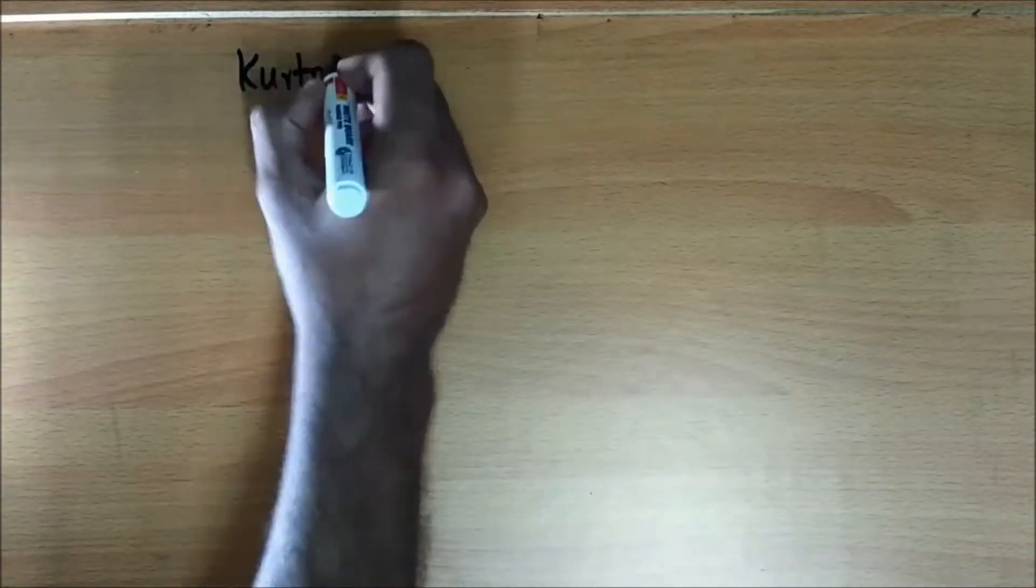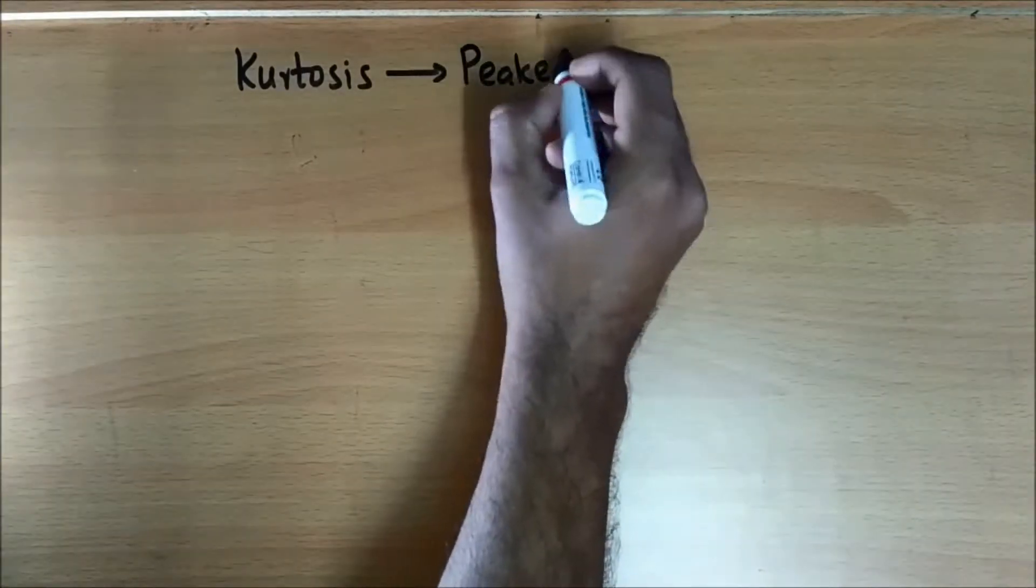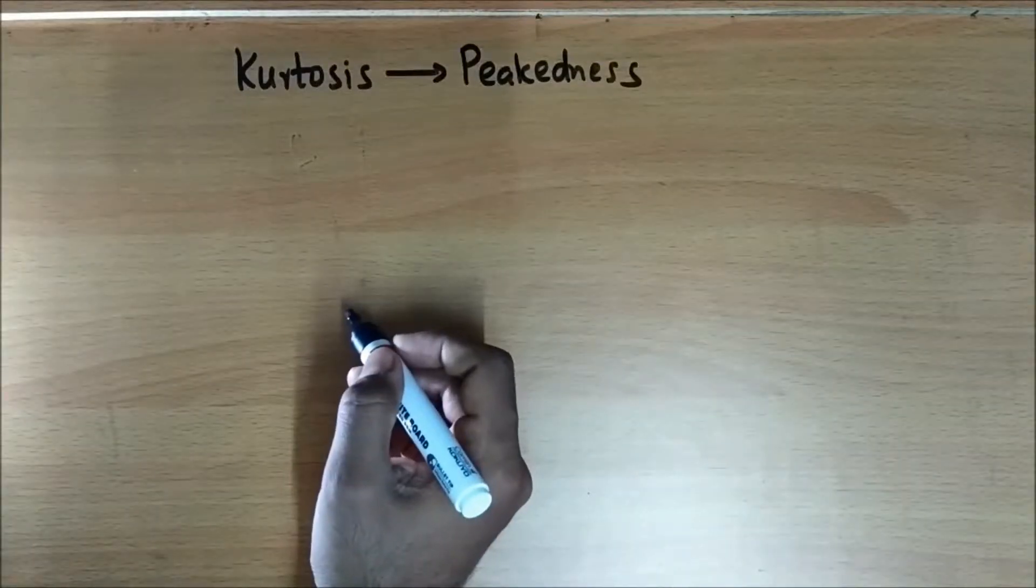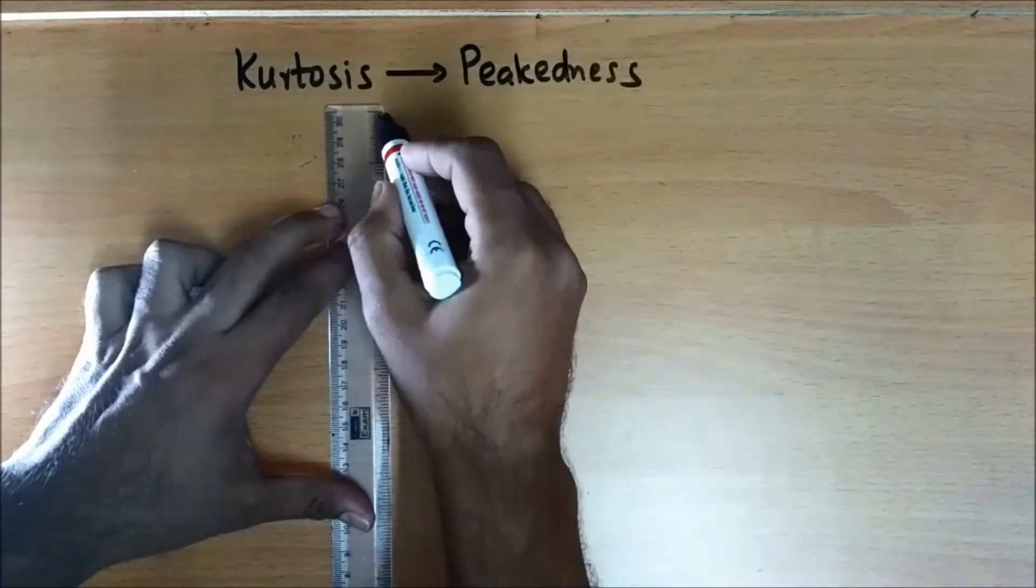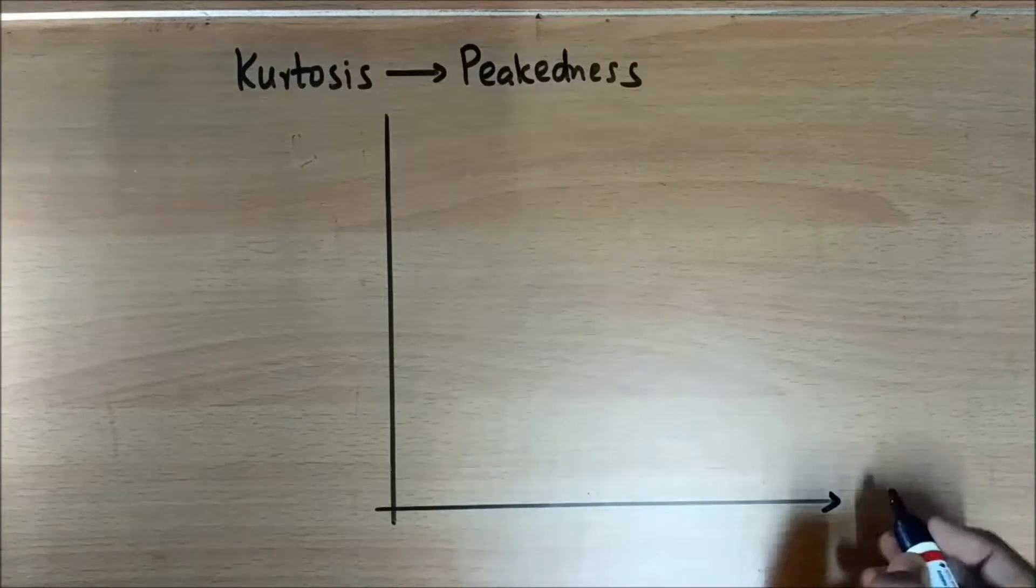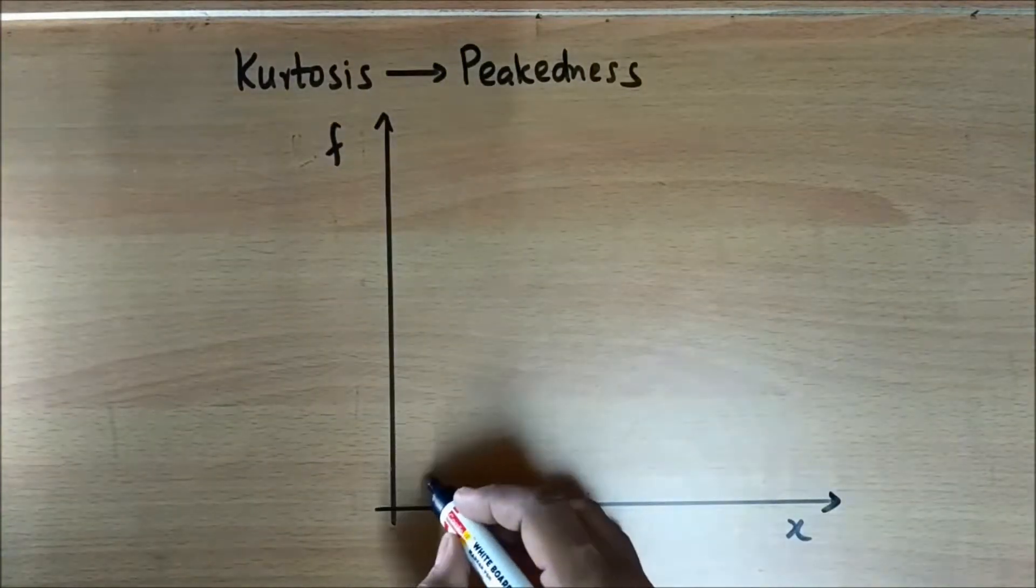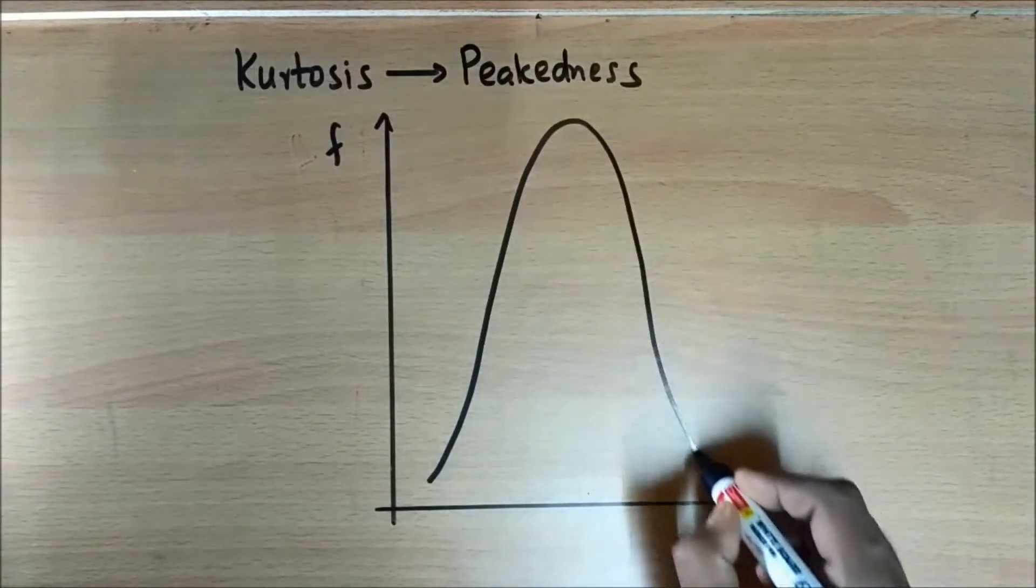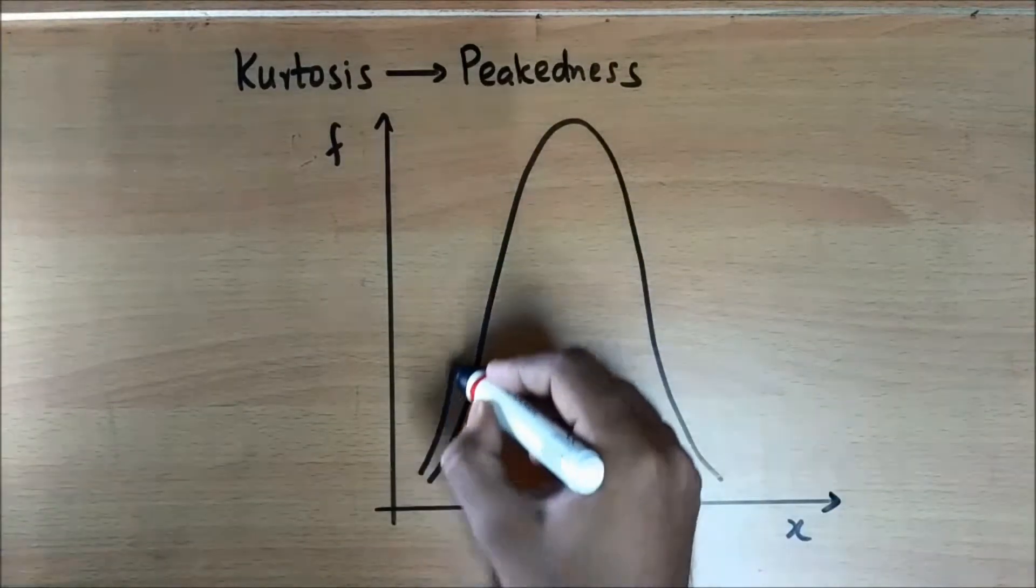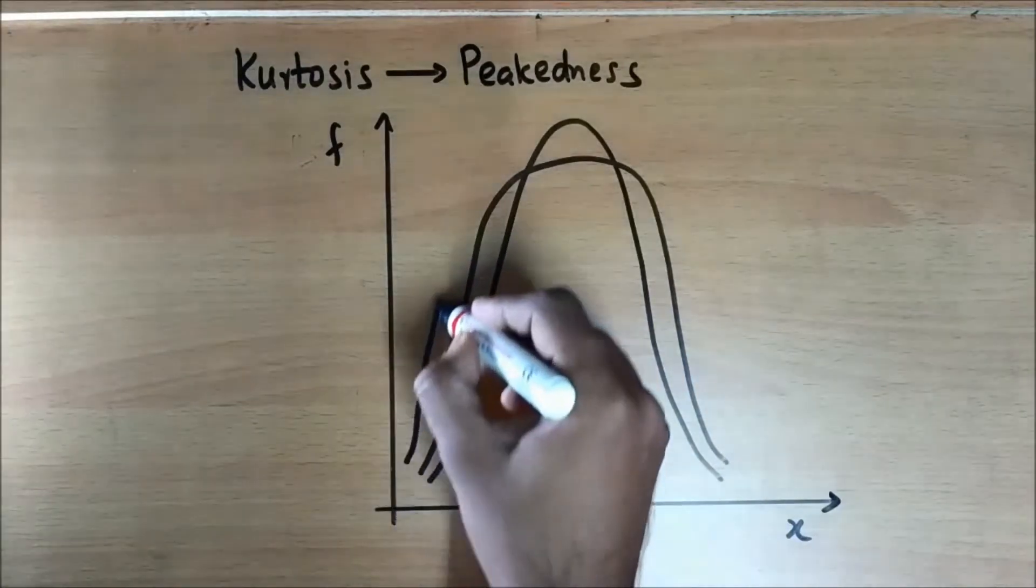Let's proceed to kurtosis now. Kurtosis means peakedness. It describes the peaks of the frequency distributions. Now again, let us prepare the various frequency distributions explaining kurtosis. So you have x versus the frequency. Now let's draw the various frequency curves. There you go. The first one has a sharp peak, the second slightly flattened, and the third flat like a plateau.